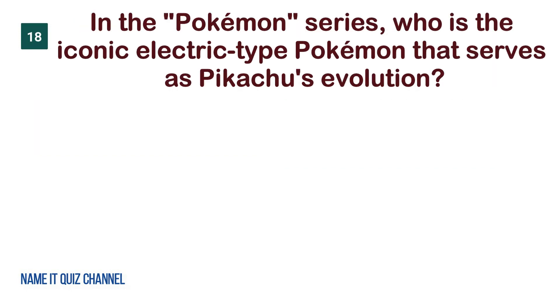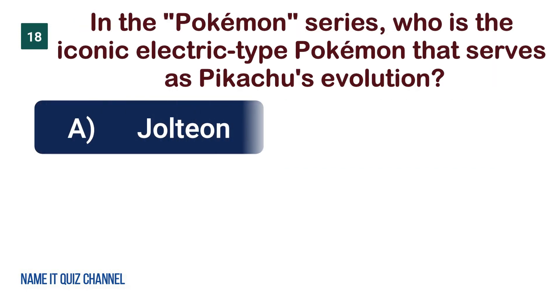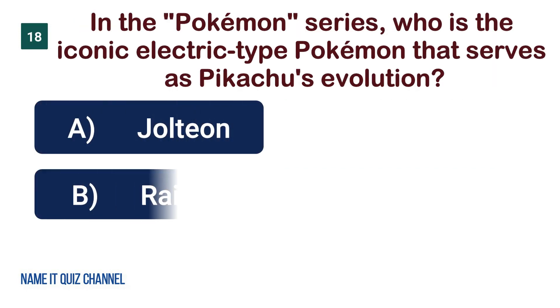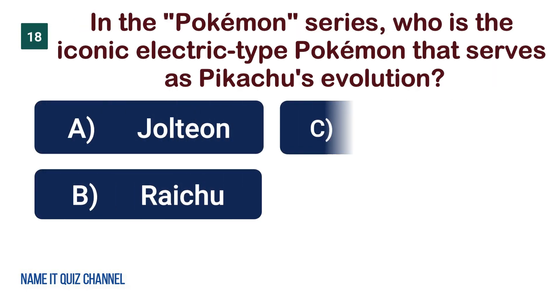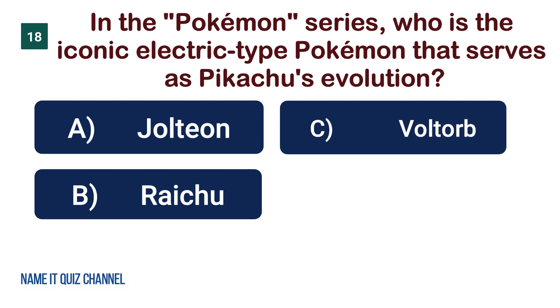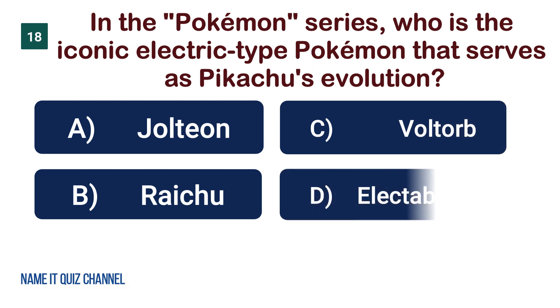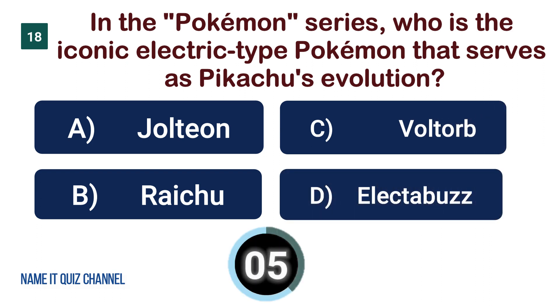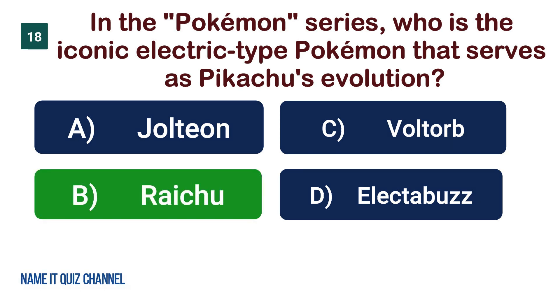In the Pokémon series, who is the iconic electric-type Pokémon that serves as Pikachu's evolution? Raichu.